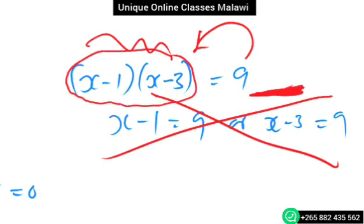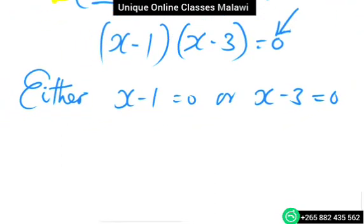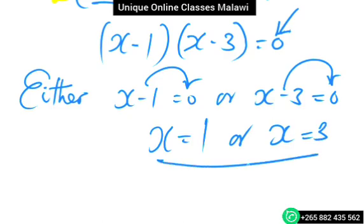We should find the values of x. So x is equal to positive 1, or x is equal to positive 3. That's how we are done.